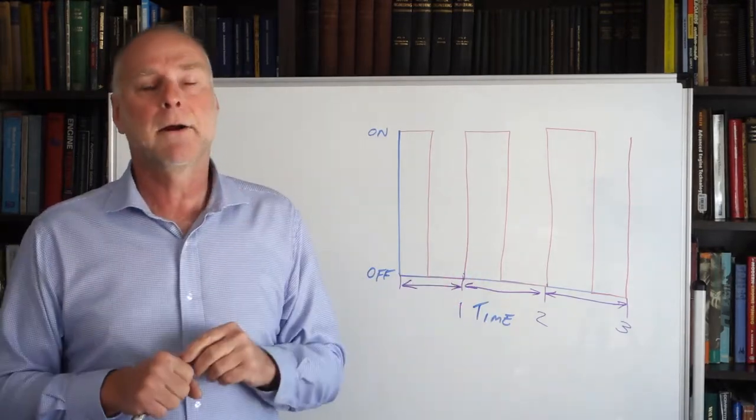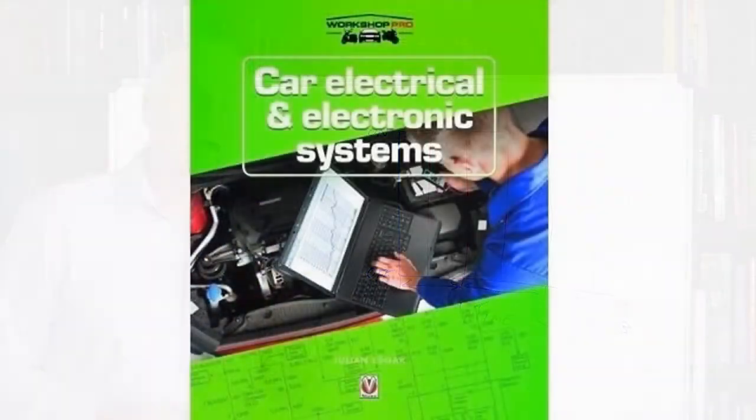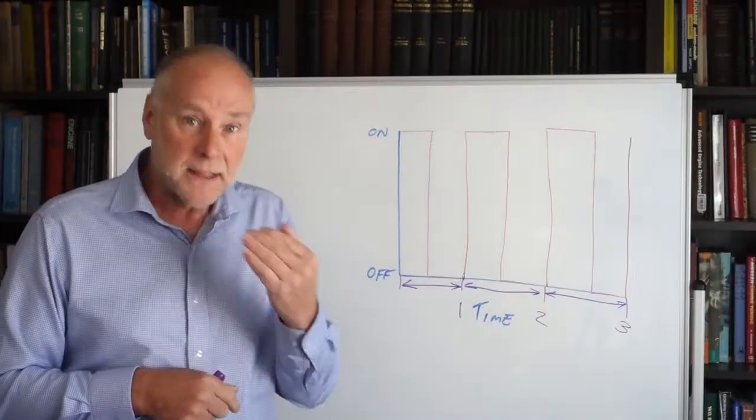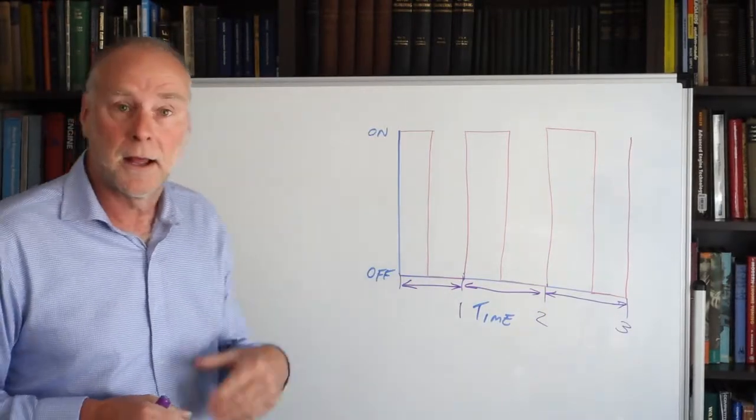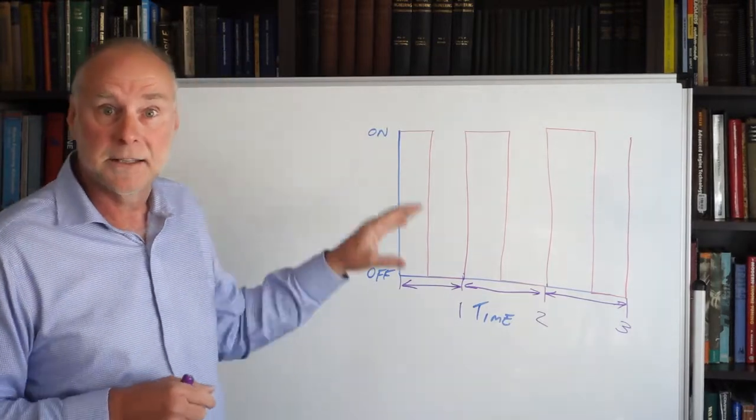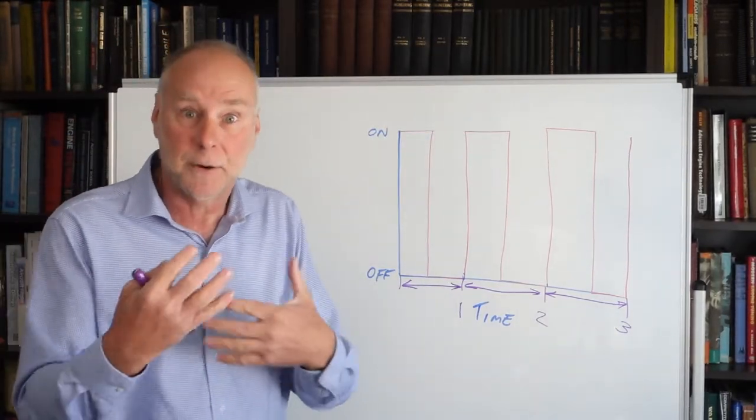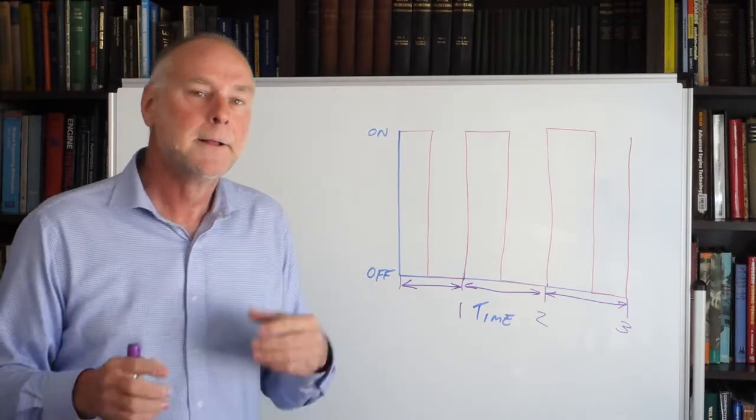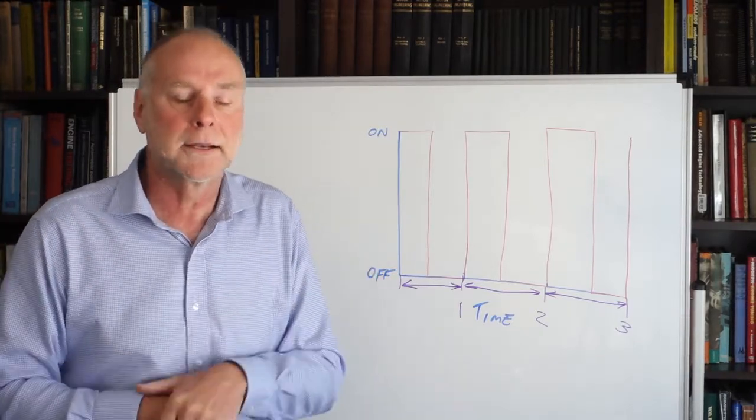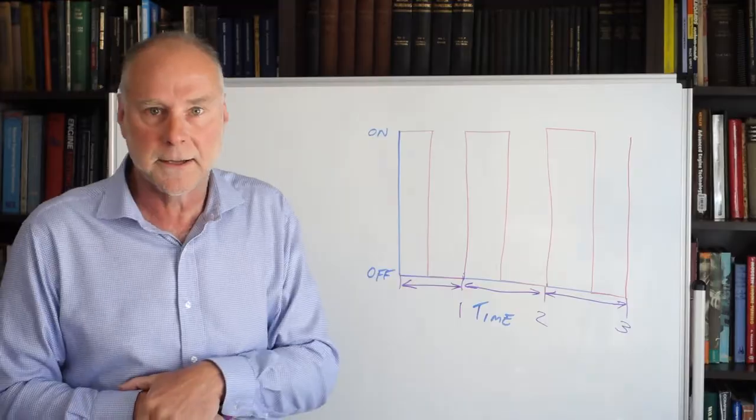The book's called Car Electrical and Electronic Systems. I cover the idea of frequency and duty cycle in that book. I also have oscilloscope displays that show varying duty cycle signals actually measured on a car, varying frequency signals actually measured on a car. That helps paint the picture in your mind. Car Electrical and Electronic Systems, thank you.